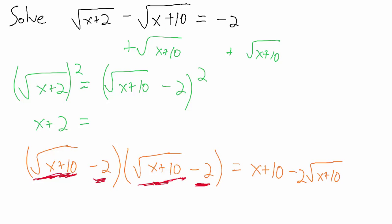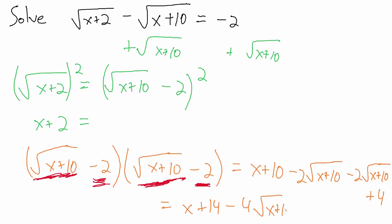The Inner term is minus 2 times the square root of x plus 10, which gives the same thing again: minus 2 times the square root of x plus 10. The Last term is minus 2 times minus 2, which gives plus 4. Combining like terms: x plus 10 plus 4 is x plus 14, and the two middle terms combine to minus 4 times the square root of x plus 10.